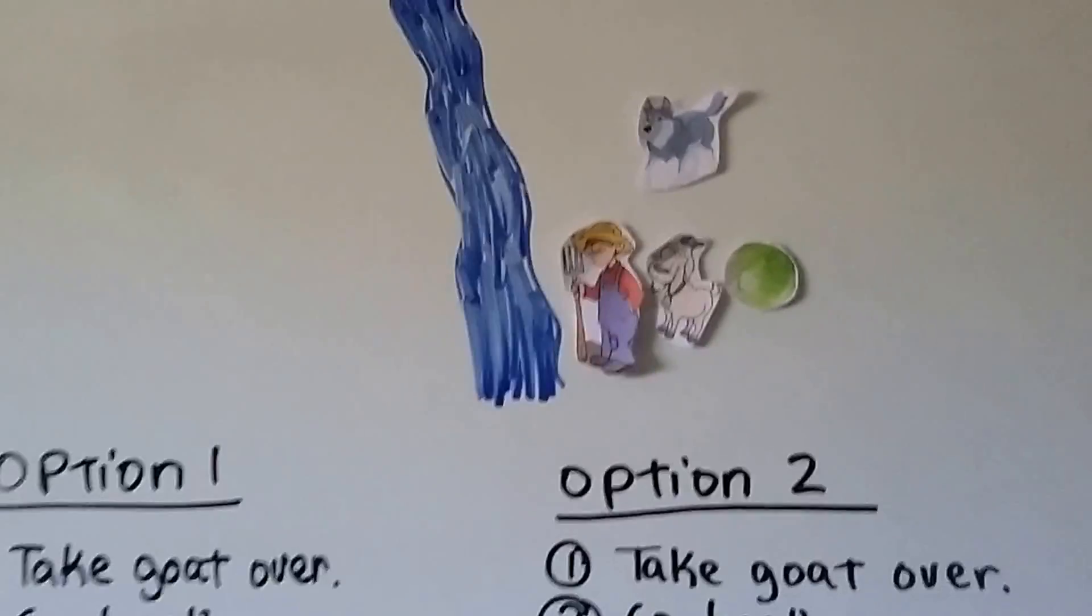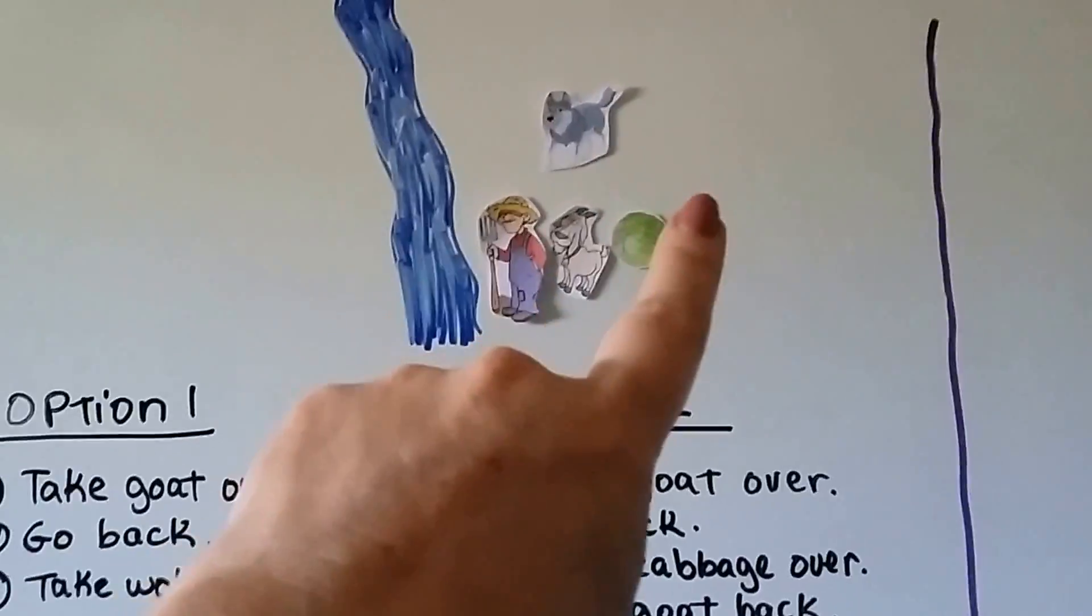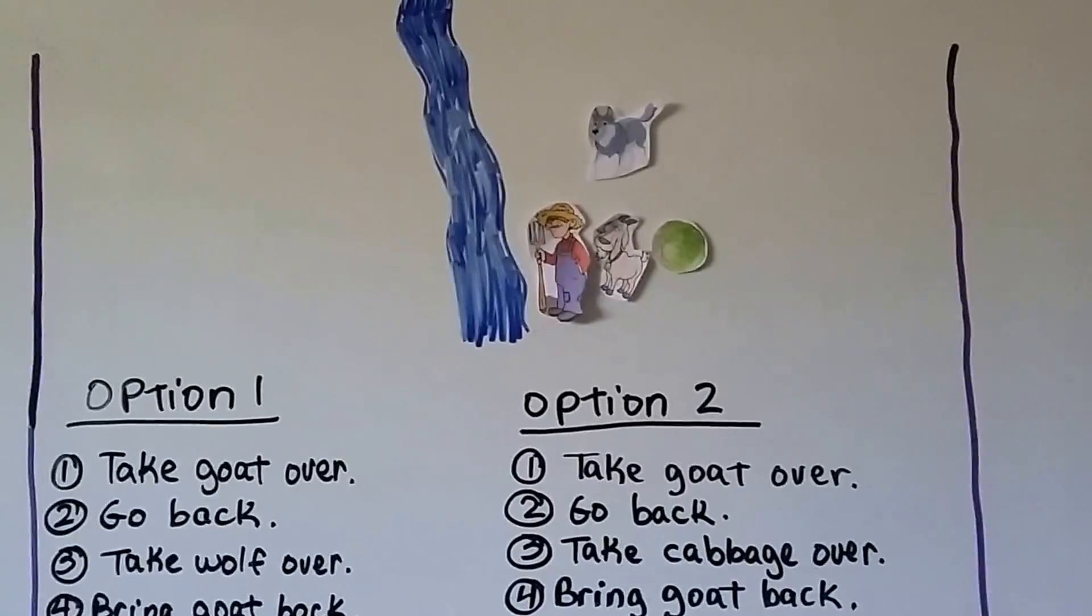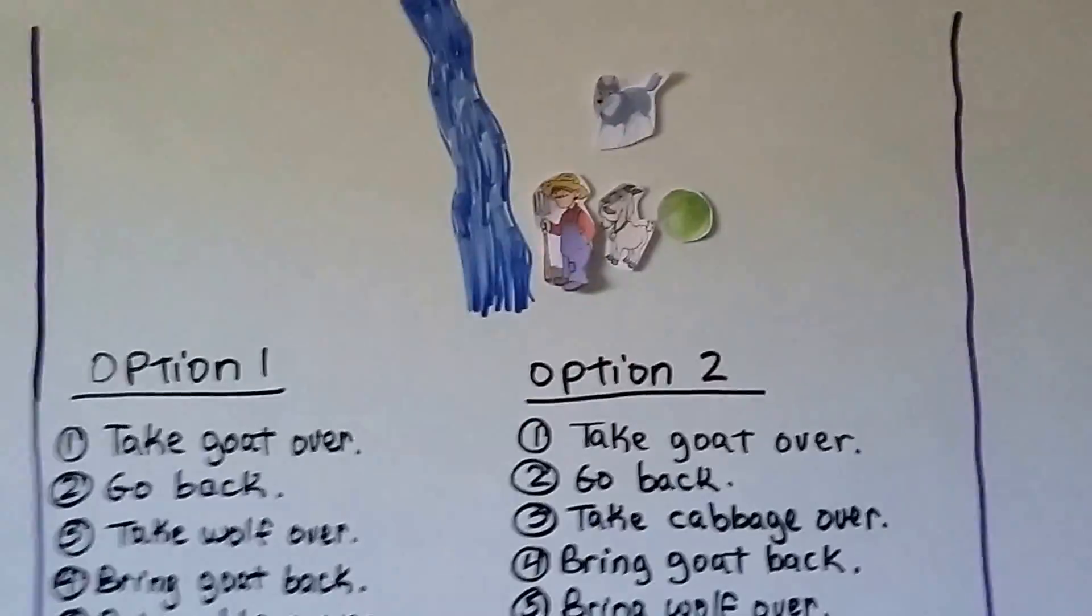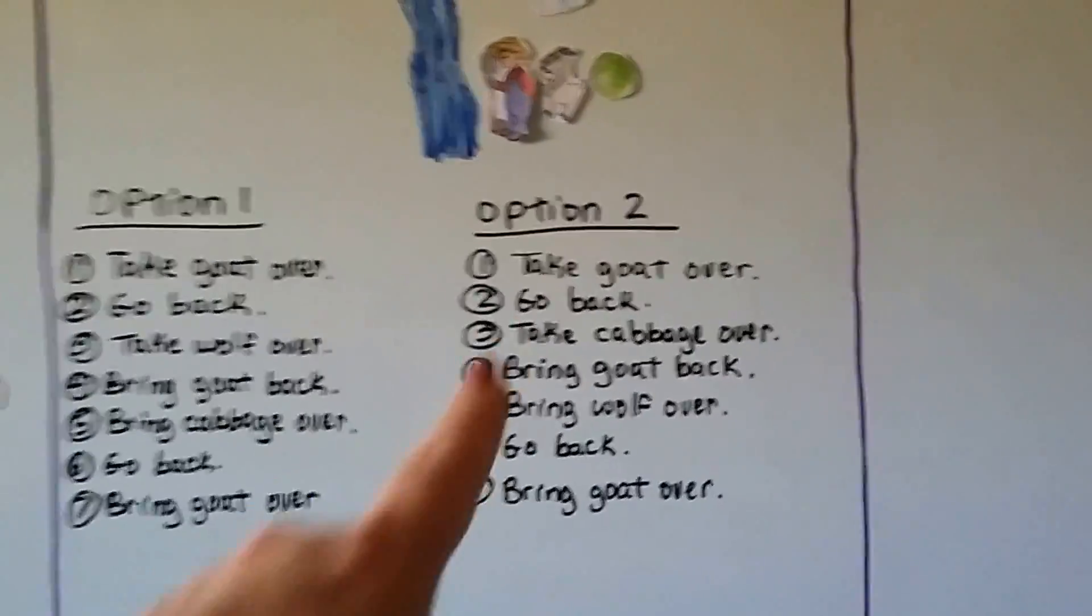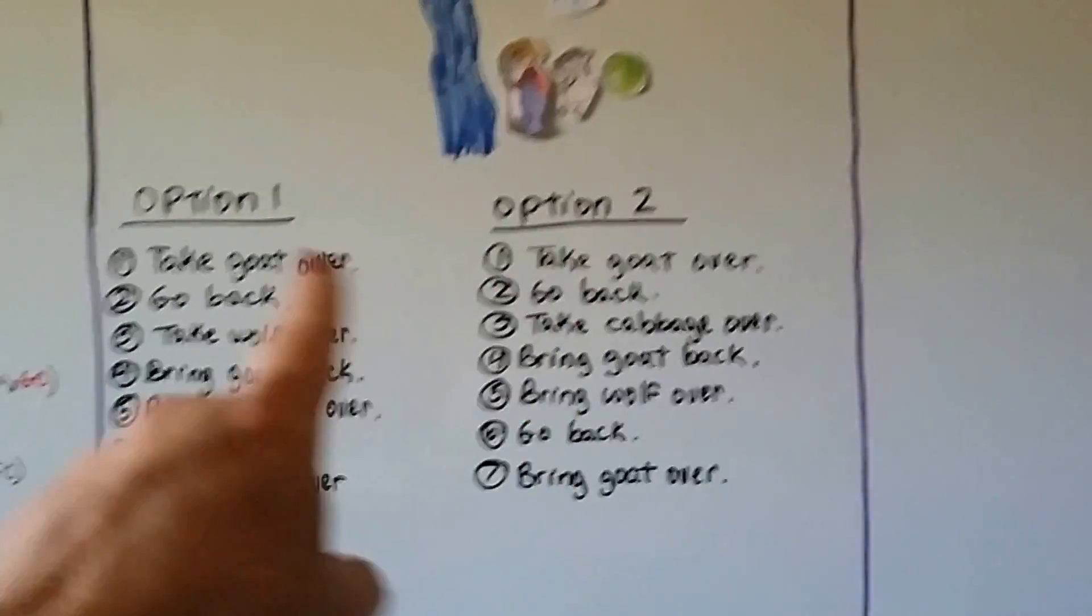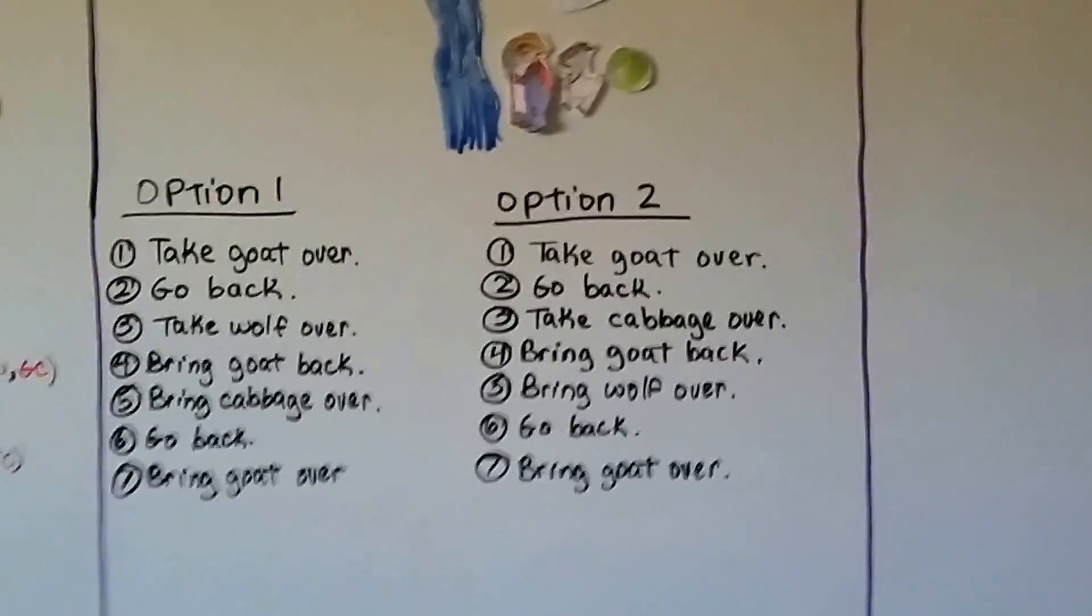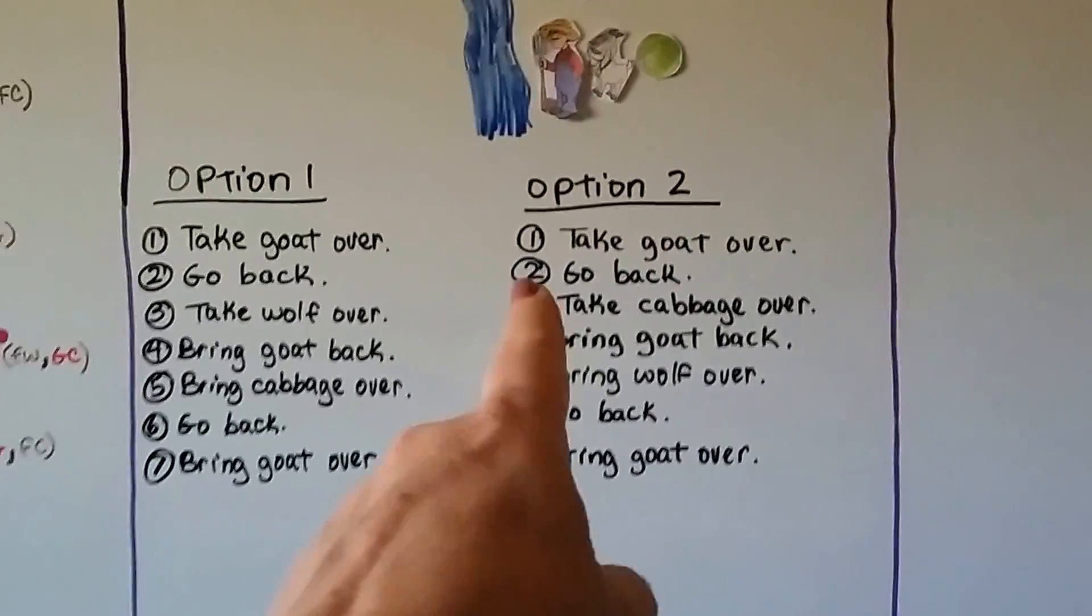So what happened was he brought something over, came back, brought something else over, but brought the goat back with him. That way they weren't left alone. So he can still take the goat over, see how both options have that as the first and going back as the second.